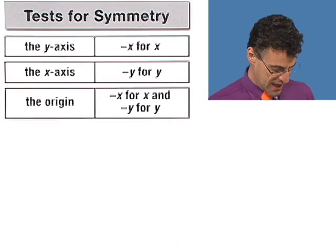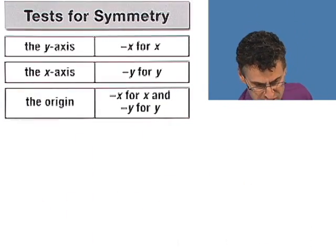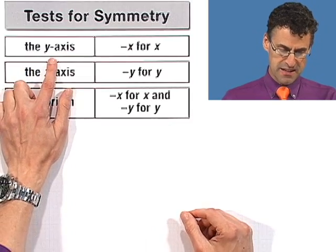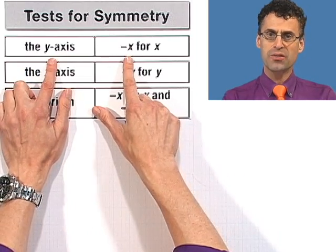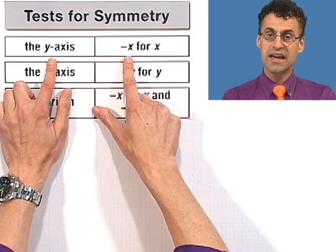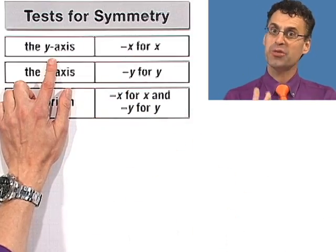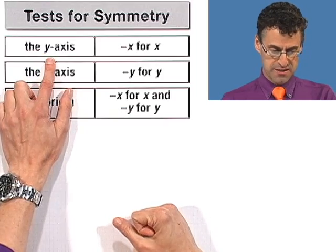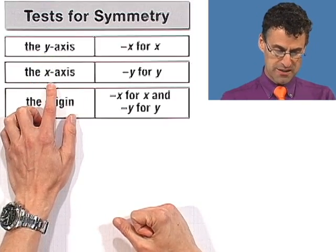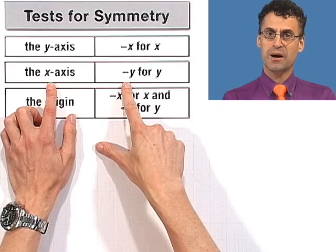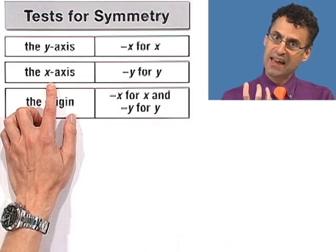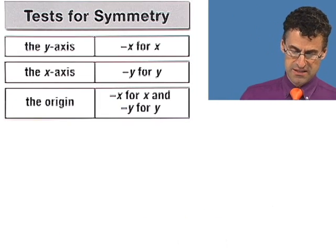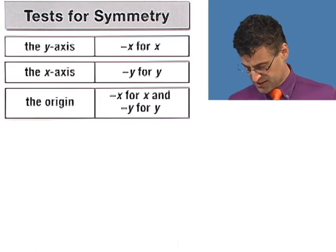So now we can actually put this into practice and test any particular curve for symmetry. If you want to check symmetry with respect to the y-axis, you just replace all the x's by negative x's and see if you get the exact same thing you started with. If so, you have symmetry with respect to the y-axis. With respect to the x-axis, you replace all the y's by negative y's and see if you get the exact same thing. And for the origin, you switch the signs of both x and y together.